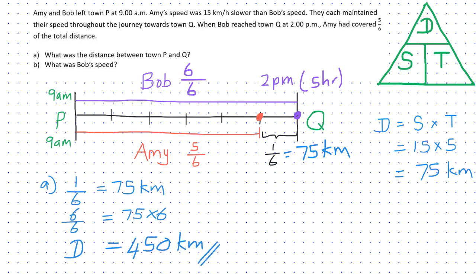So moving on to question B, we need to find Bob's speed. So speed is equal to distance travelled divided by the time taken. So we know that the distance between town P and Q is 450 km. And Bob took 5 hours to complete his journey. So 450 divided by 5 gives you 90 km per hour, which is Bob's speed.